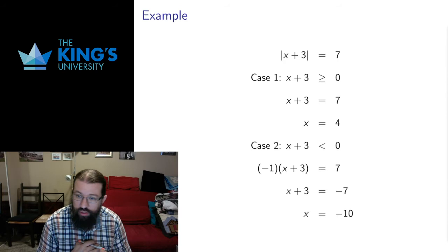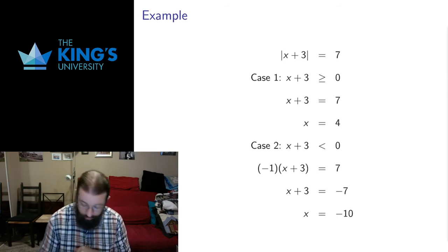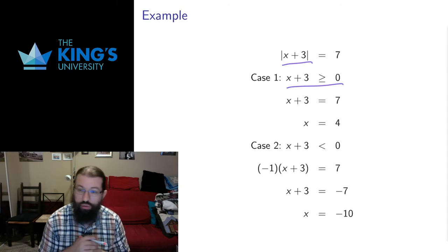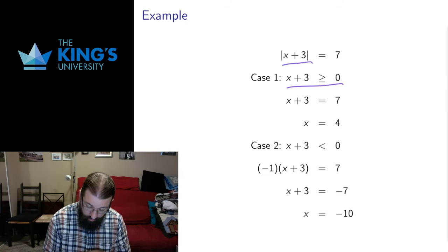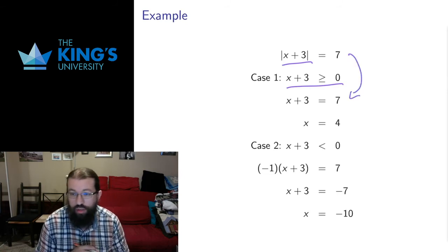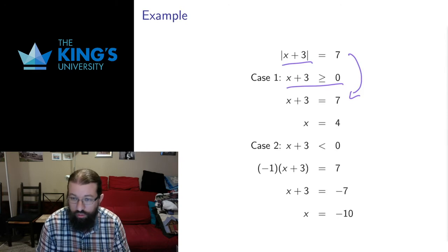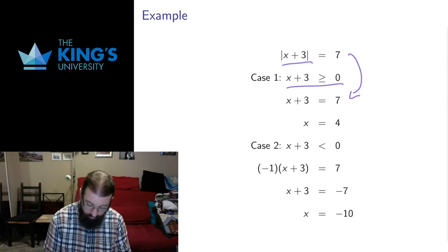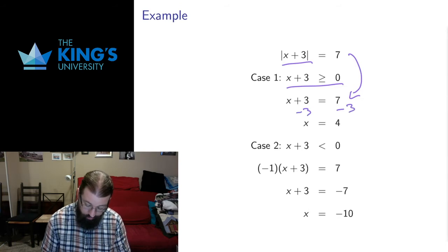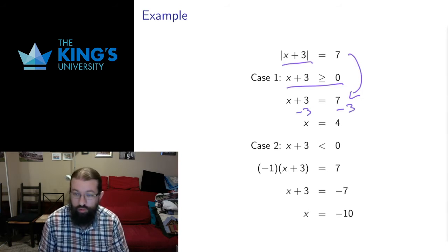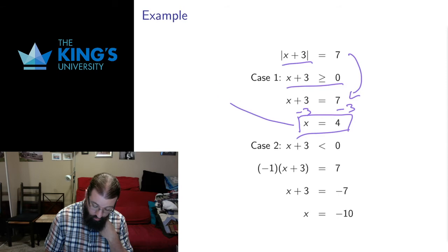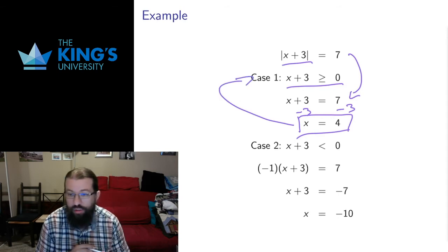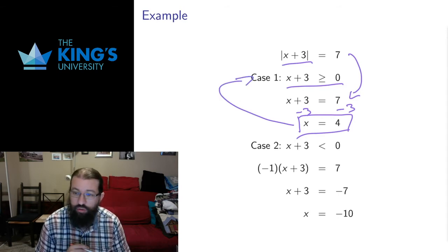First, absolute value of x plus 3 is 7. So I'm going to work in two cases. I'm going to assume the thing inside the absolute value is positive or possibly 0. That's my first case. In that case, I go from the first line to the third line and just drop the absolute value. Then I subtract 3 from both sides of the equation. The 3's go away on the left, 7 minus 3 is 4, and I get one solution. I should always check that my solution fits my case. So is this a number that's actually in this case? 4 plus 3 is 7. That is larger than 0. So yes, this fits that case. This is a valid solution for case 1.